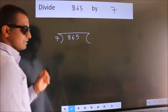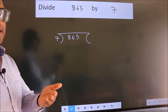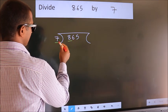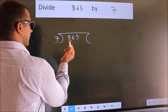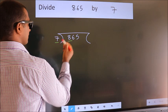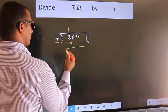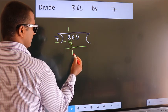This is your step 1. Next, here we have 8, here 7. A number close to 8 in the 7 table is 7 once 7. Now we should subtract. We get 1.